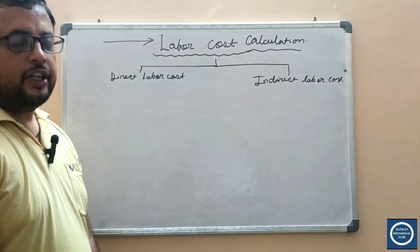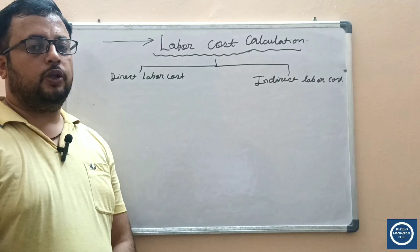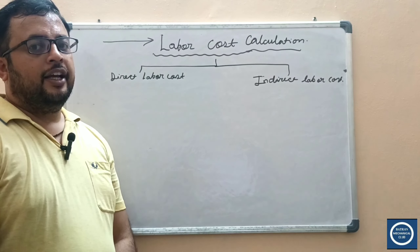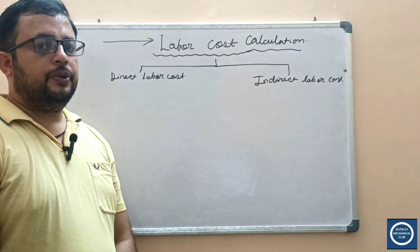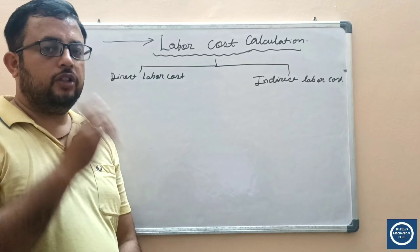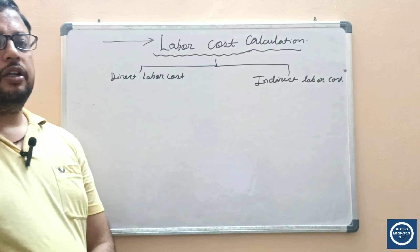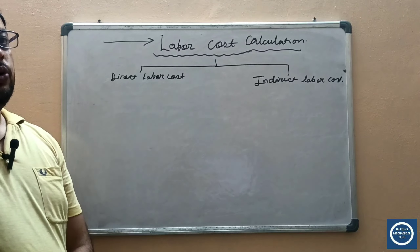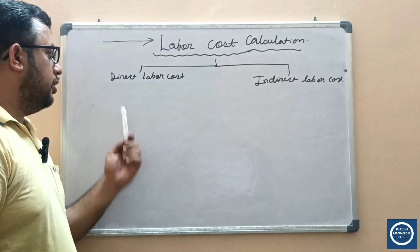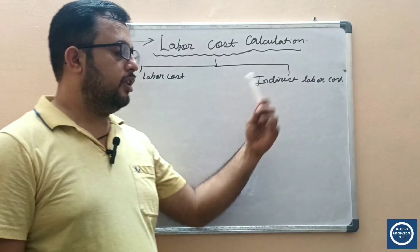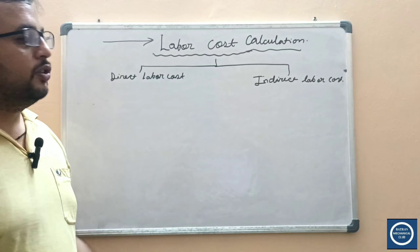Hello friends, welcome to Batrap and Computer Channel. Today we will discuss labor cost calculation. Laborers are persons working on the line to convert raw material to finished product. There are two types of labor that work on a line or in a plant: direct labor and indirect labor. The cost of labor is also added to your costing sheet.